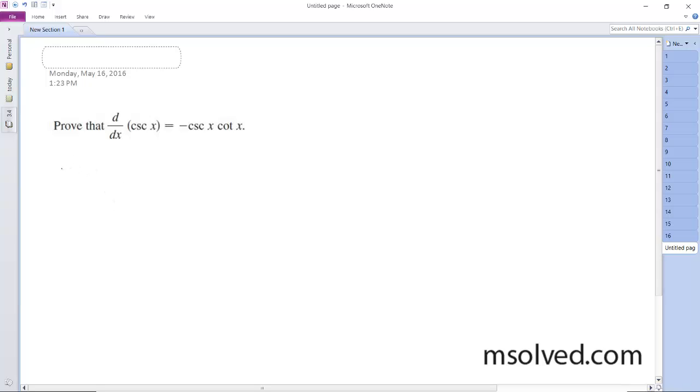So we can rewrite cosecant of x as the same thing as 1 over sine of x. And what we do here is just use the quotient rule.